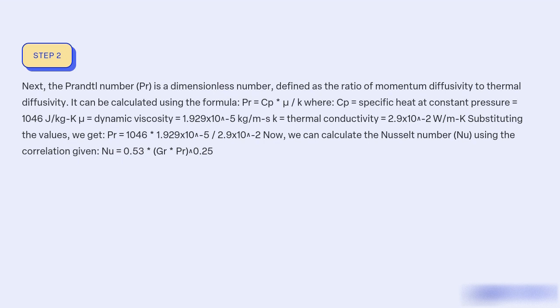Substituting the values, we get Pr = 1046 × 1.929×10⁻⁵ / 2.9×10⁻². Now we can calculate the Nusselt number (Nu) using the correlation: Nu = 0.53 × (Gr × Pr)^0.25.